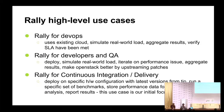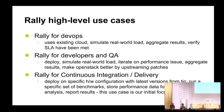If you look at the Rally documentation, there are typically three high-level use cases. There's Rally for DevOps: you have an existing cloud, you simulate some real-world load, aggregate those results, and verify that some service-level agreement is being met. For developers in QA, it's a bit different — you've got something on your desk, maybe access to 10 or 20 nodes, and you can use Rally in that kind of environment. The one we've been trying to focus on is for continuous integration and continuous delivery.